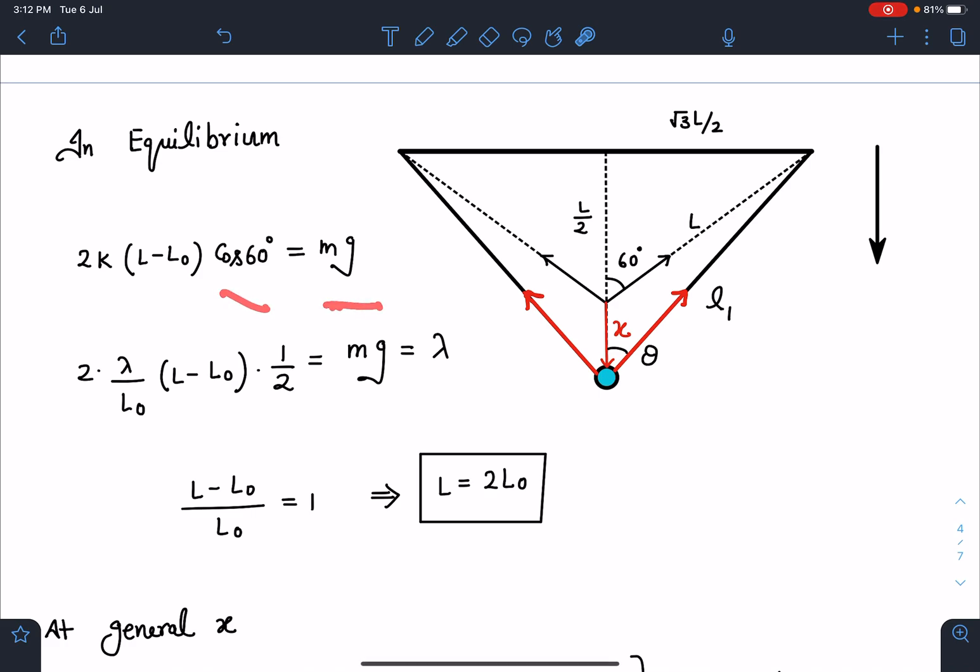If we equate this, we are going to get (L - L₀)/L₀ = 1, or in this situation here this length is 2L₀. This is what is given to us in this problem.